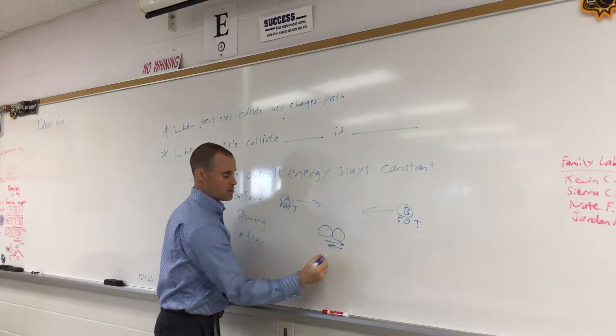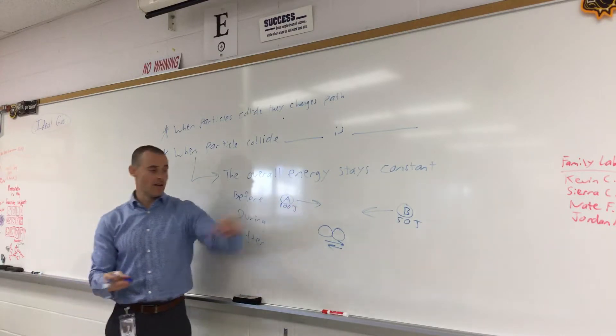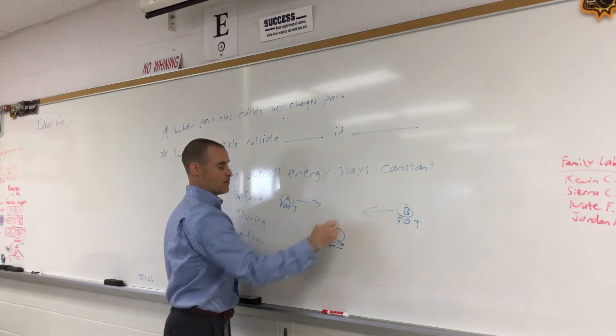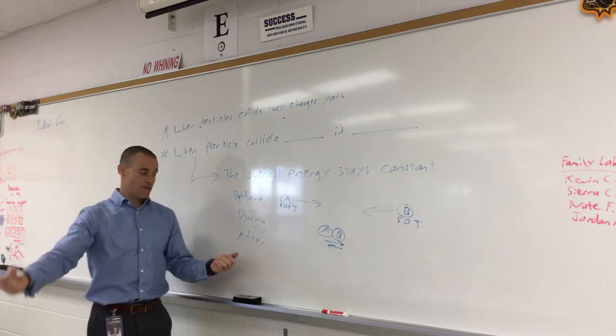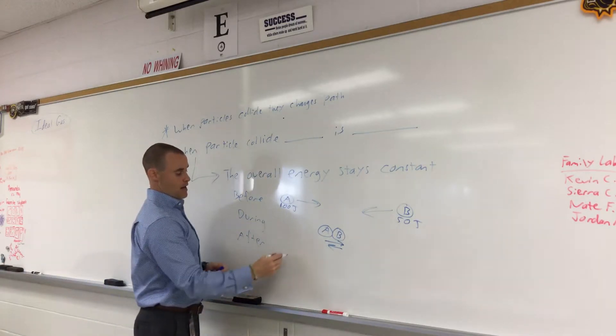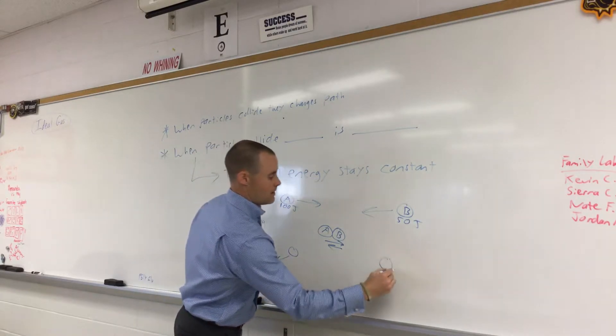So A was moving with 100 joules, B is moving with 50. They're going to bounce off each other, right? So now A is probably going this direction and then B is going in that direction.